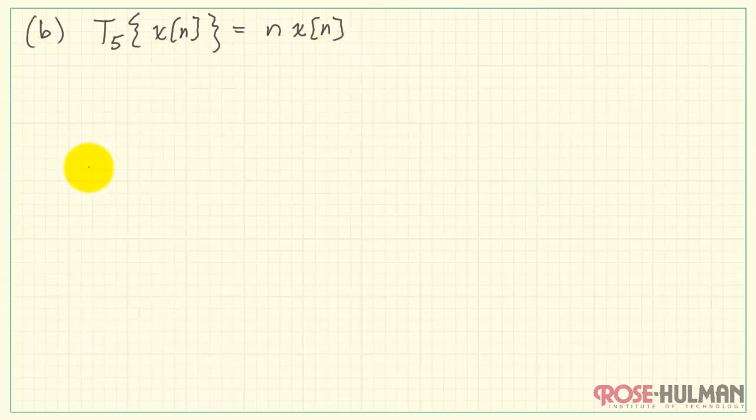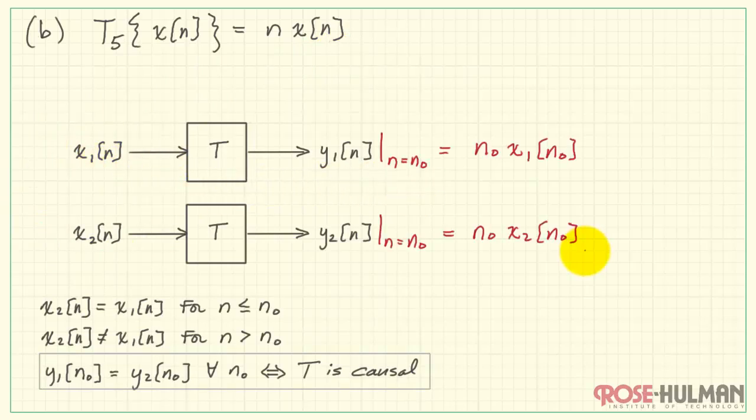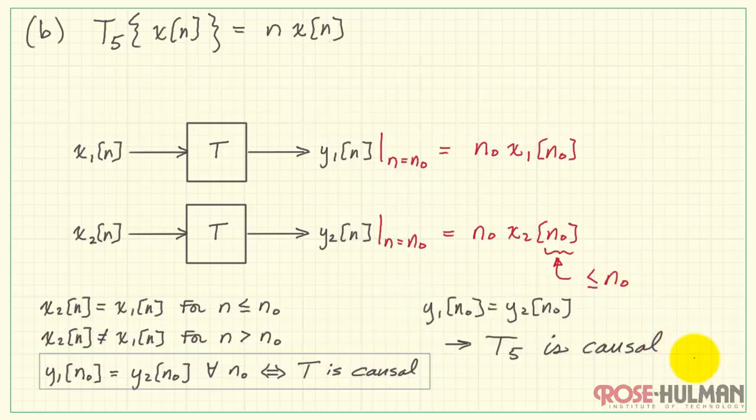All right, our second system, T5. This is n times x of n. Let's do the same thing as before, evaluating the two outputs at n0. Now we ask the question, Is the time index expression always less than or equal to n0? The answer is yes. y1 is equal to y2 at n0, therefore, T5 is causal.